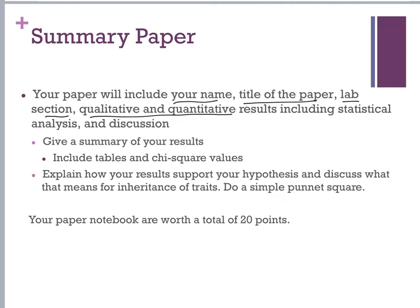We're going to include a discussion. Make sure you're giving a summary of your results — that's going to be written as well as tables and your chi-square. You want to make sure you're explaining your results and whether or not they support your hypothesis. We're all going to be writing a null hypothesis. You also want to discuss what this means for the inheritance of the traits, and you're going to show a simple Punnett square.